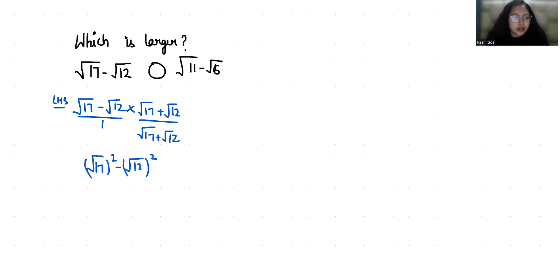So root 17 square minus root 12 square, this gives us 17 minus 12 by root 17 plus root 12. 17 minus 12 is 5 by root 17 plus root 12.